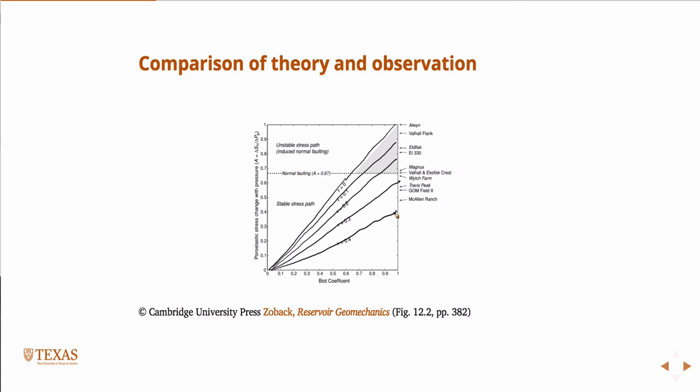This is delta Sh delta P over delta P. He calls it A. So the stress change with pressure is a function of Biot coefficient. Then just plug in different values of Poisson ratio, you get they lie along these lines.